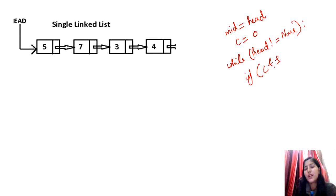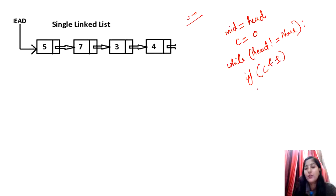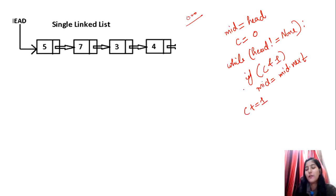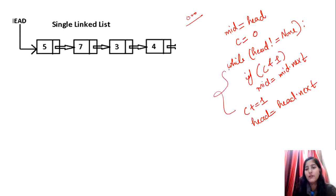Using bitwise AND between an even number and 1 gives 0, but for odd numbers the condition is true. So if c & 1 is true, we move our mid pointer one step ahead. If not, we don't move mid. Either way, we increment c and move head one step ahead.